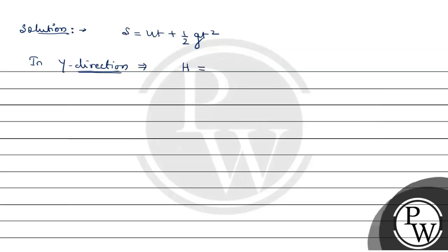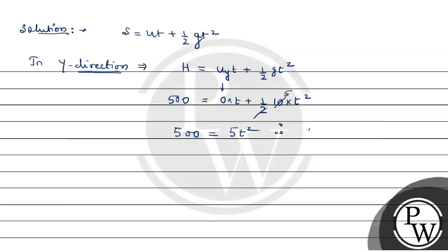Height h equals u_y·t plus ½g·t². Initial vertical velocity is 0, so we have h = ½g·t². Height given is 500 meters, so 500 = ½ × 10 × t², which gives t² = 100, therefore t equals 10 seconds.